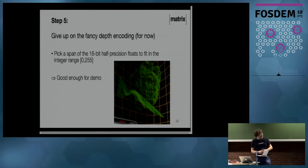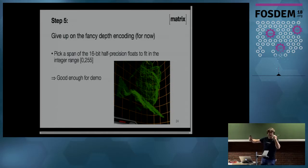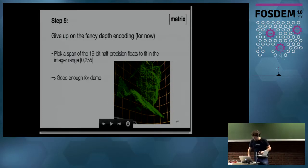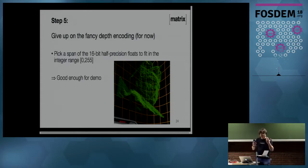Step five: give up on the fancy depth encoding and say, 8 bits of depth is good enough for anybody — especially if it's between here and here. 256 depth values across that range is good enough. And empirically, here is a dot cloud of my face in green showing that it's not looking too quantized — it looks like it might be all right.